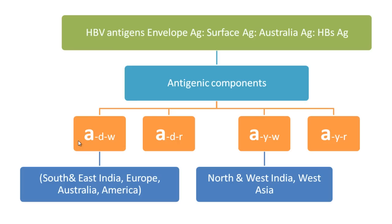The hepatitis B surface antigen has three types of antigenic components. One component is predominant and shared by all types — that is the A component, as seen in the slide. The remaining two components are either D or Y, and the third is either W or R. This gives four combinations of hepatitis B surface antigen: ADW, ADR, AYW, or AYR.